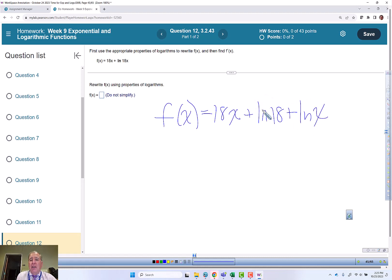The natural log of 18 is just a constant. So when we do our derivative, we're going to get f prime of x equals 18 plus the constant here turns into a zero when we take the derivative, and the natural log of x gives me 1 over x.